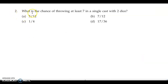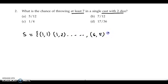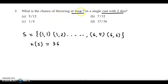Now question 2: What is the chance of throwing at least 7 in a single cast with two dice? When we throw two dice, the sample space is (1,1), (1,2), (1,3) and so on, up to (6,6). So n of S is equal to 36. Now we need at least 7.